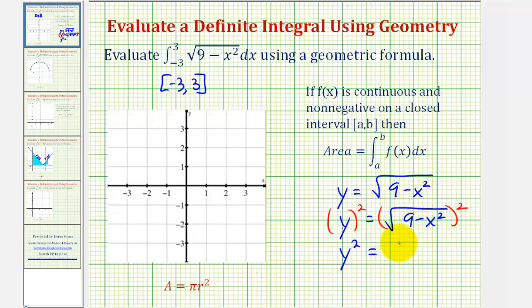The squaring will undo the square root, so we have y squared equals nine minus x squared. Let's go ahead and add x squared to both sides of the equation. Now we should recognize that this is going to be a circle with the center at the origin with a radius of three.